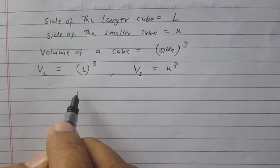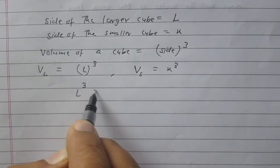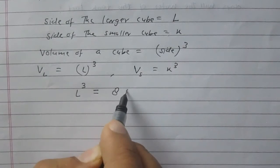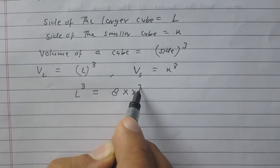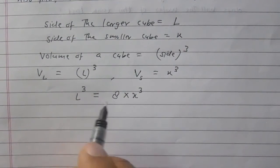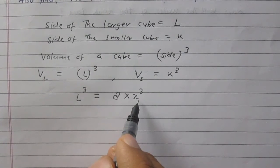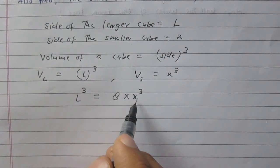According to the question, volume of the larger cube is equal to 8 times the volume of smaller cube. Because this larger cube is cut into 8 equal cubes, the cubes of equal volume.